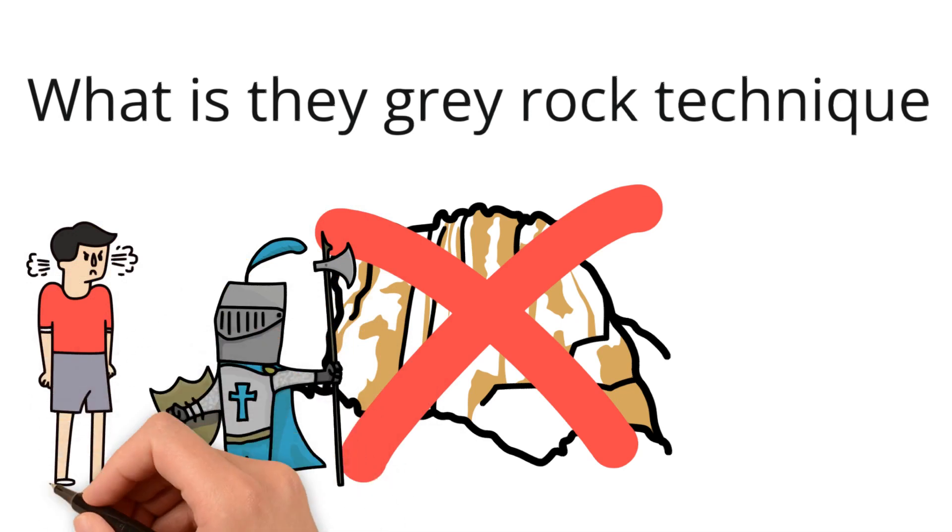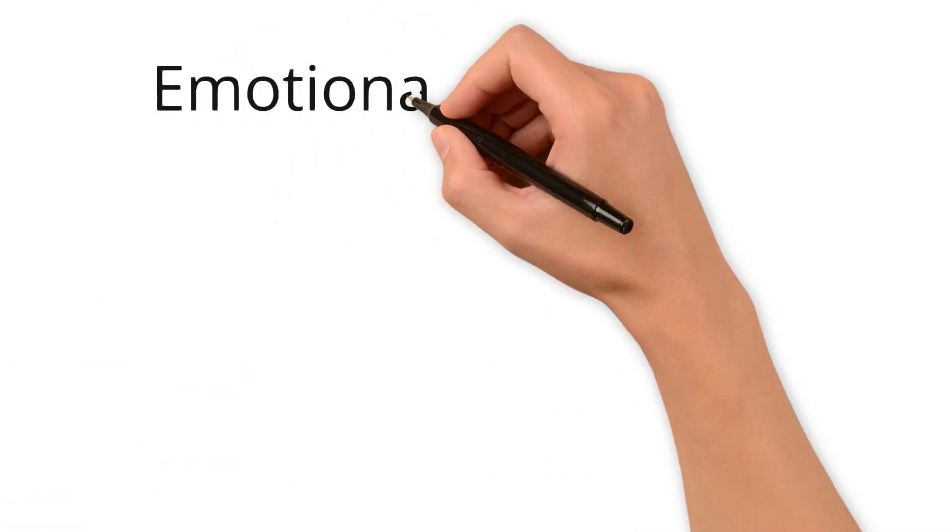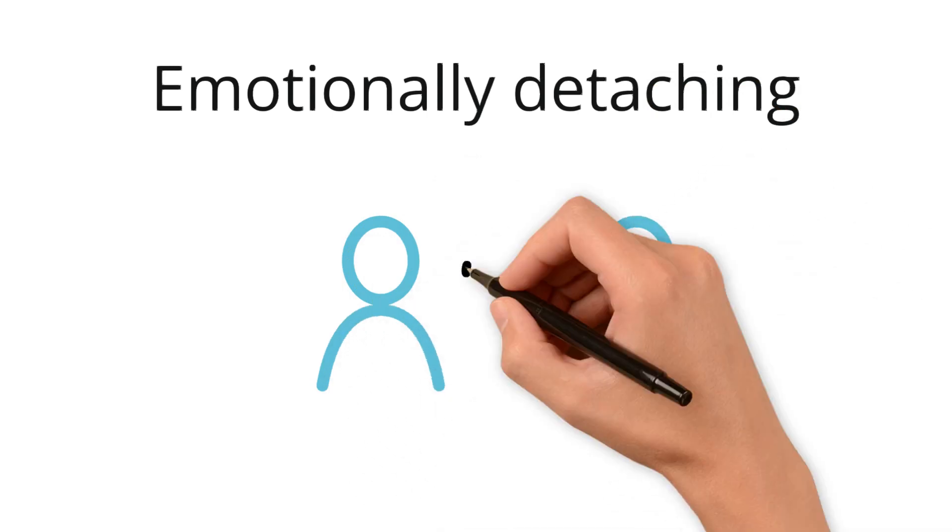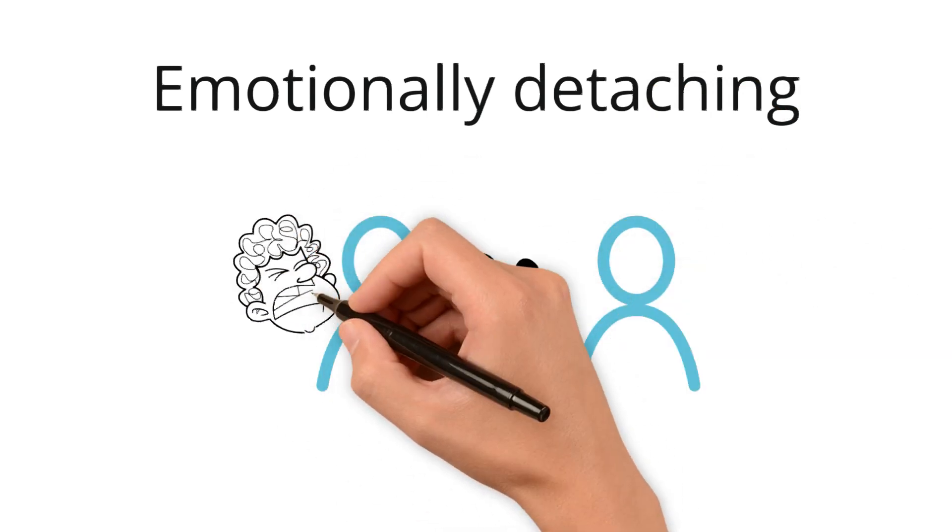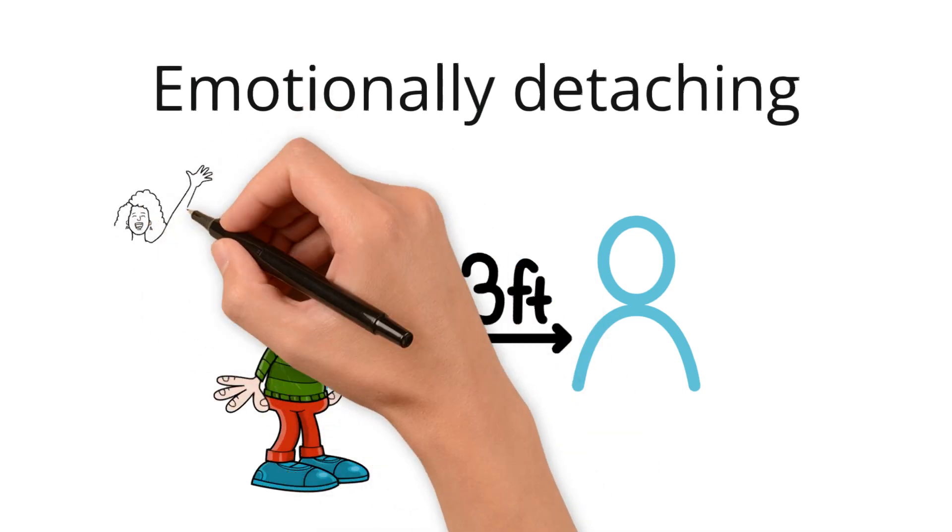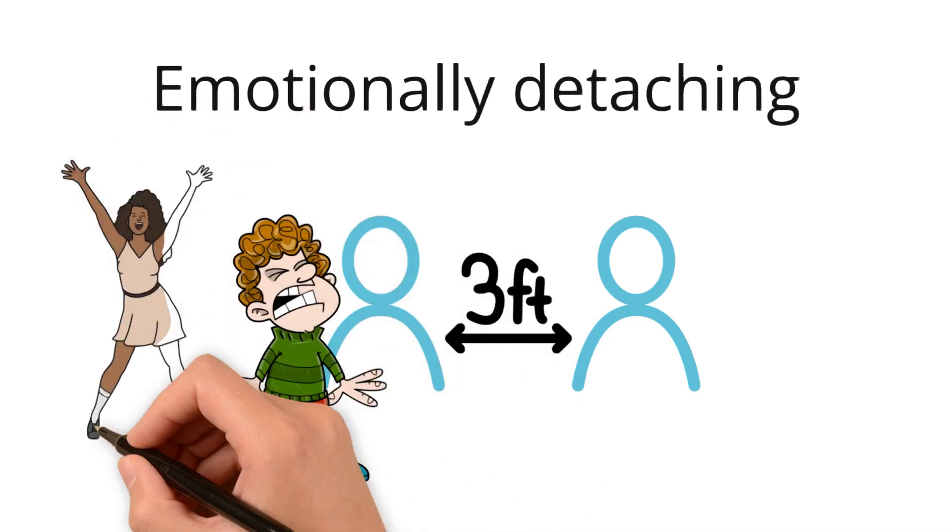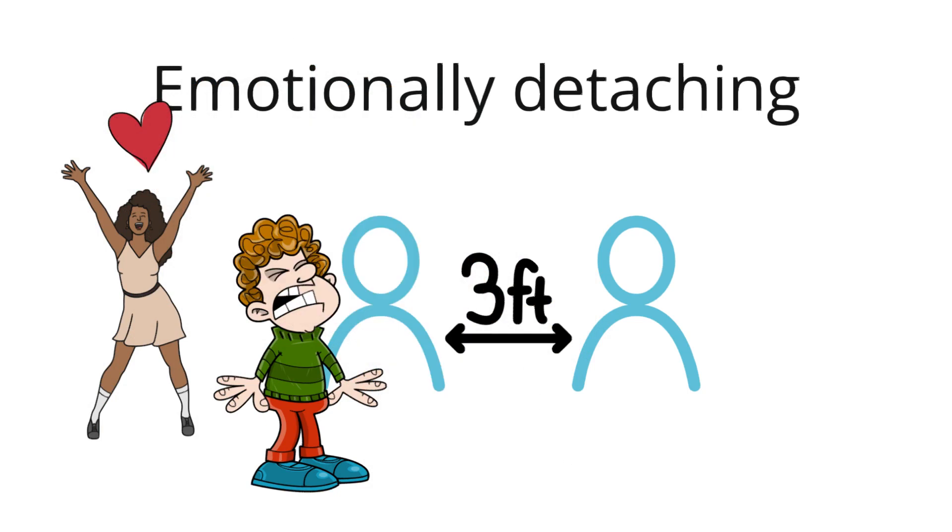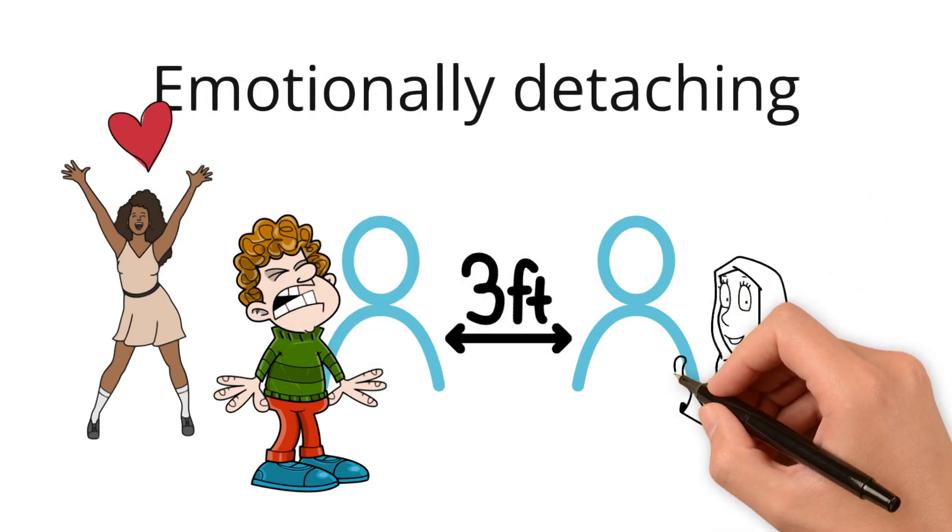You achieve it by, first of all, emotionally detaching. You maintain emotional distance. You avoid reacting to the narcissist or to the borderline provocations. For instance, if they are triangulating you and trying to make you feel jealous by using someone else, you don't react to that.